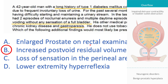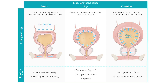An enlarged prostate was not mentioned and would not explain loss of sensation of bladder fullness. Loss of sensation in the perineal area suggests spinal cord lesions, which also cause overflow incontinence, but there's no mention of spinal cord injury — and that would also present with fecal incontinence. Lower extremity hyperreflexia was seen in the MS question and leads to urge incontinence, not overflow.